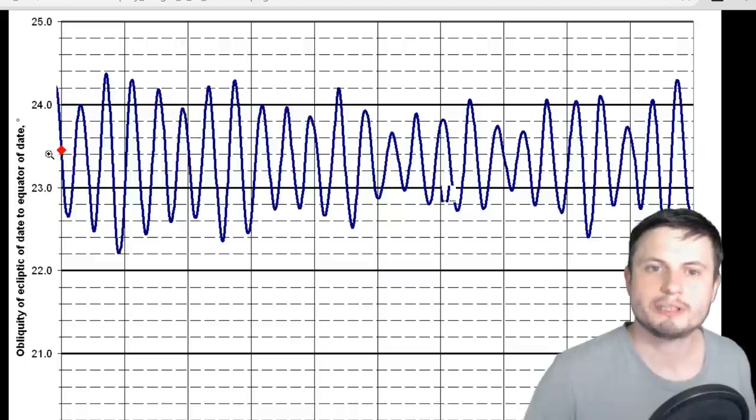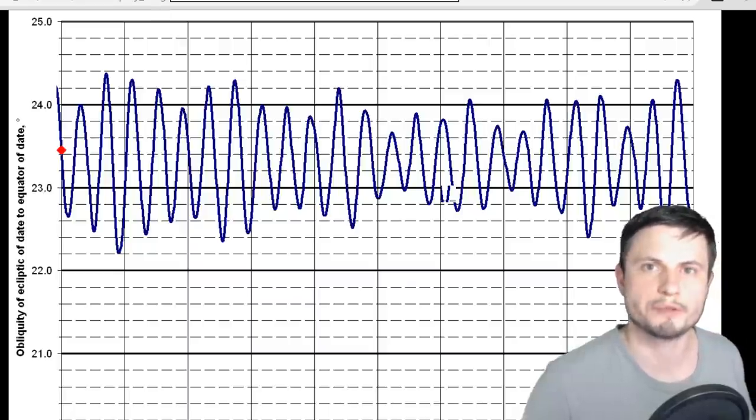As you can see currently we are right here somewhere in the middle but it's slowly dropping. Eventually though it's going to go up again. But the drop here, the next drop is not going to lead to the major glaciation period. However this drop here in approximately 100,000 years will. But before this major drop we are also going to have a major high which will probably create a very warm period on our planet in about 80,000 years from now.